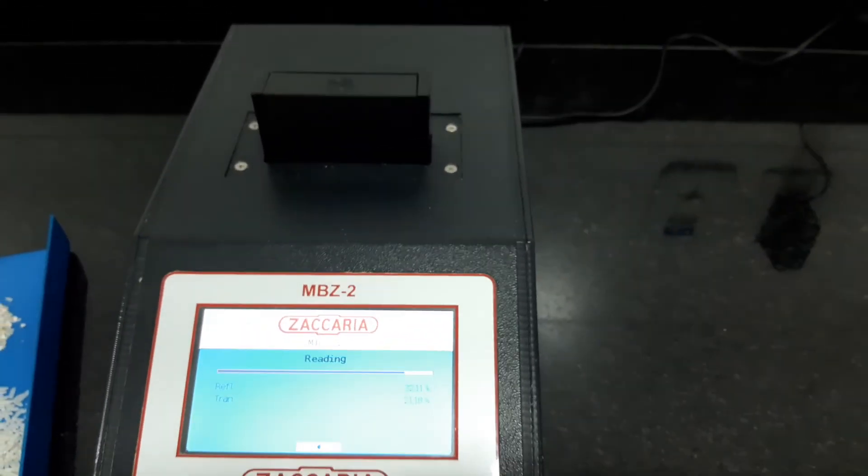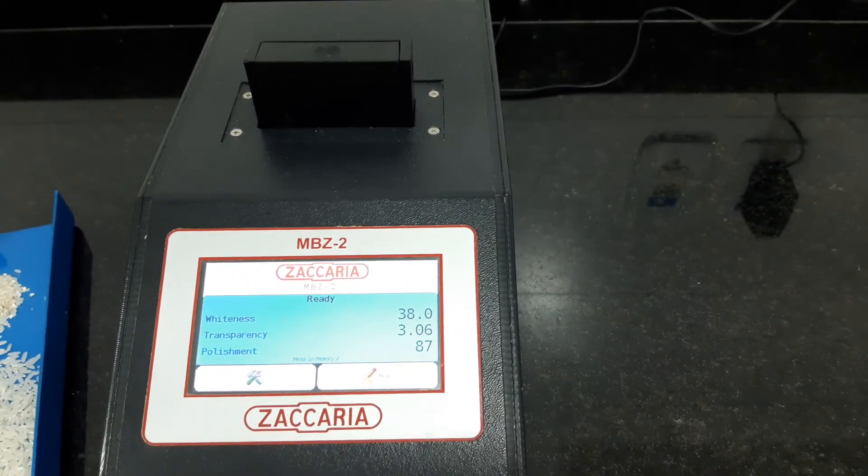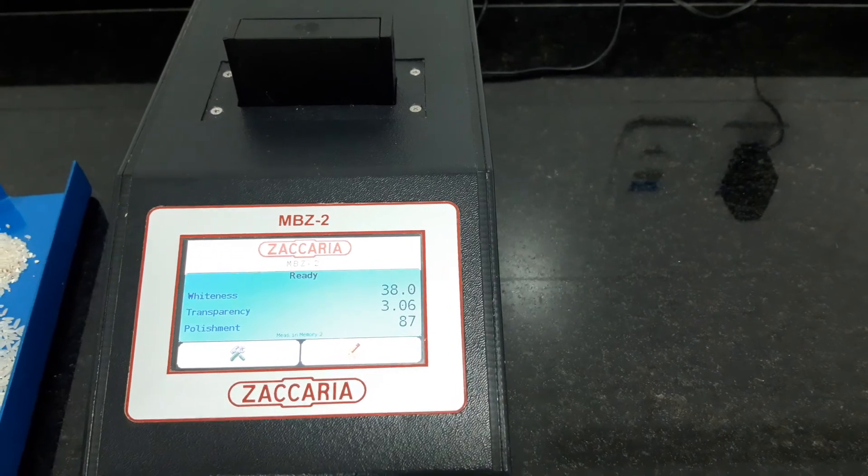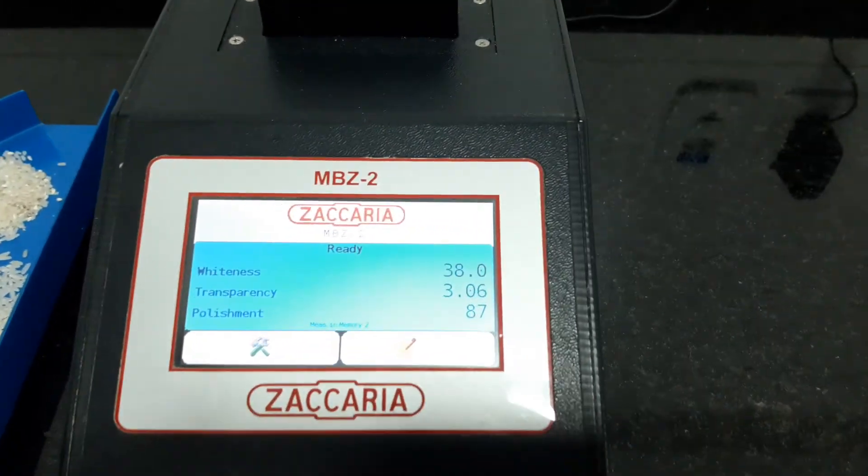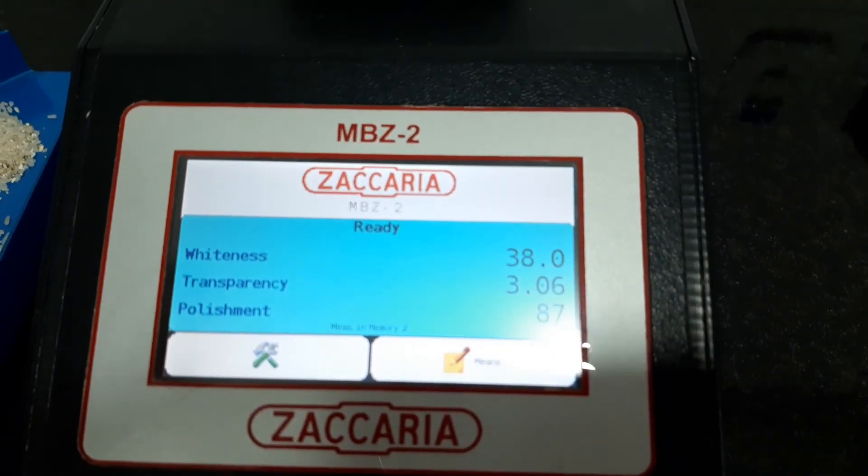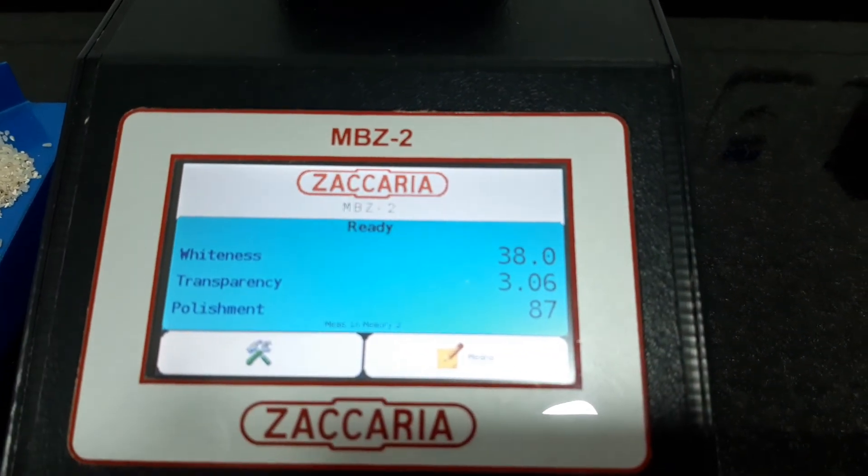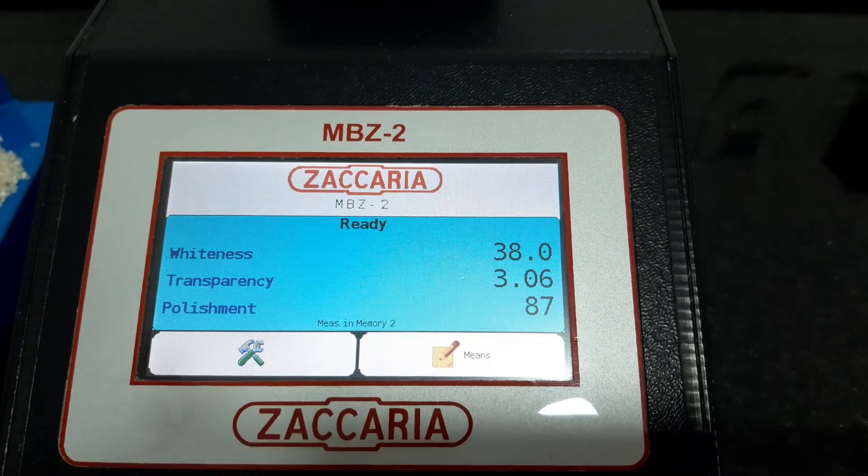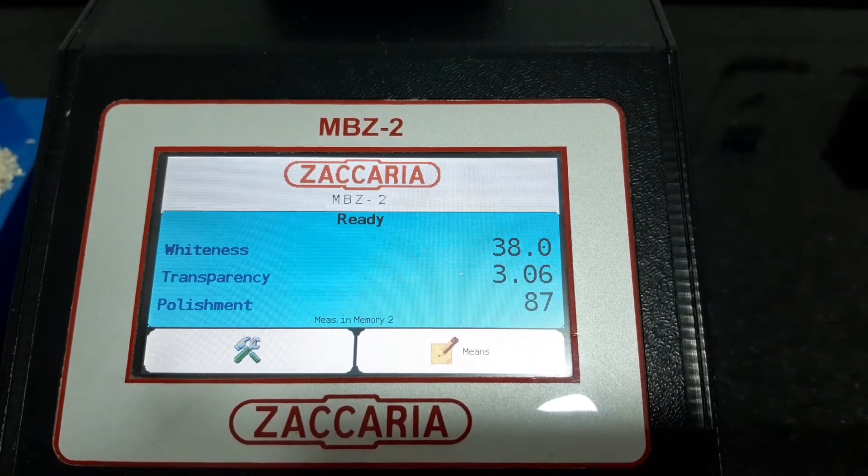The machine is reading the sample. And in the end, from this sample, we have 38 degrees of whiteness, 3.06 of transparency, and 87 degree of polishment. The polishment means the medium degree.